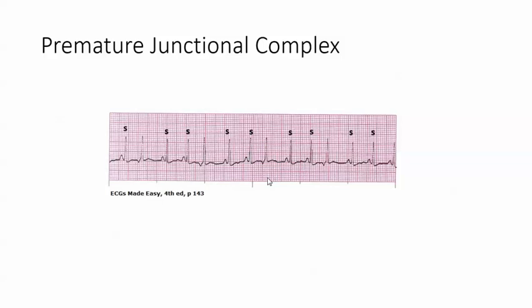So the next thing we're going to do is look at the ones that are not normal. Look at that — that's an inverted wave. Let's call that a J. So junctional rhythms — their P waves — three things can happen: you won't see them at all, they'll be inverted, or they'll occur after the QRS. So there's an inverted one, there's an inverted one, here's one, there.